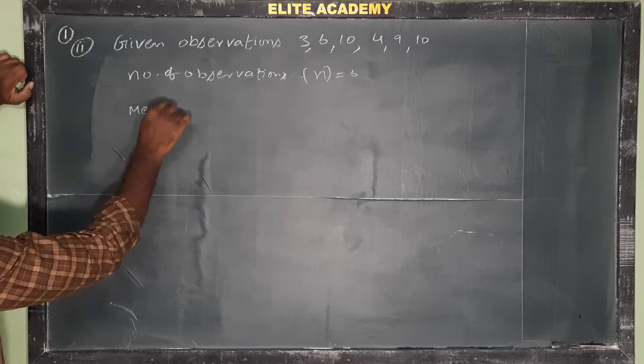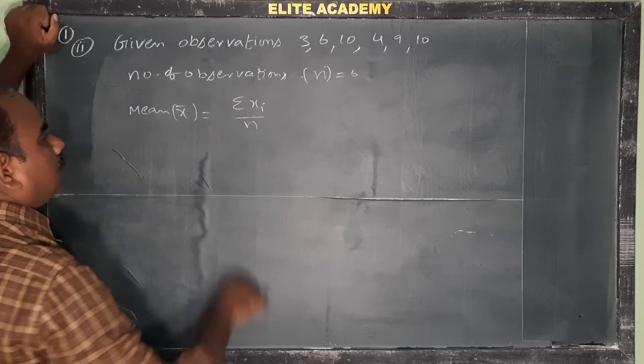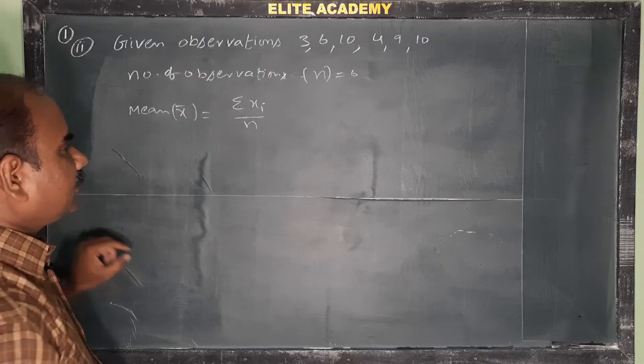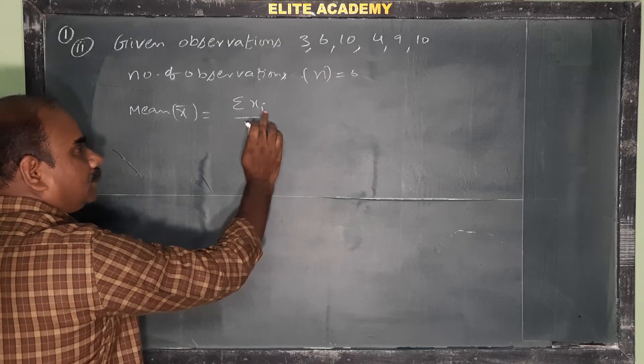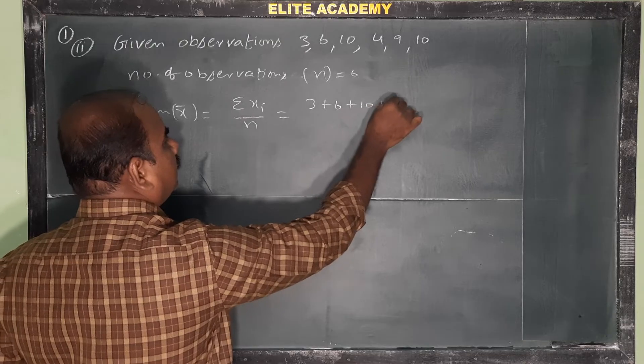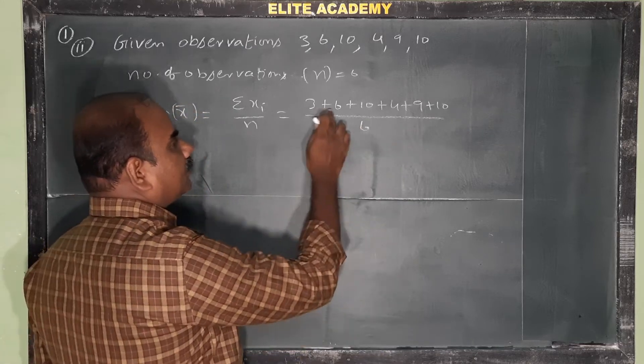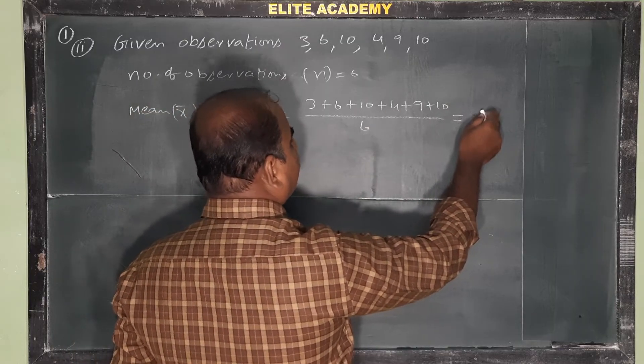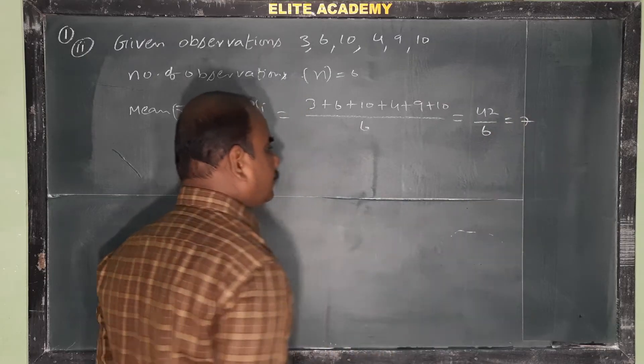Next, mean. x bar, so mean x bar is equal to sigma xi by n. So first problem: sum of observations by number of observations. Then symbolic form sigma xi: x1, x2, x3, x4, x5, x6. So 3 plus 6 plus 10 plus 4 plus 9 plus 10 by 6. That equals 42 by 6, which is 7. So mean x bar is equal to 7.